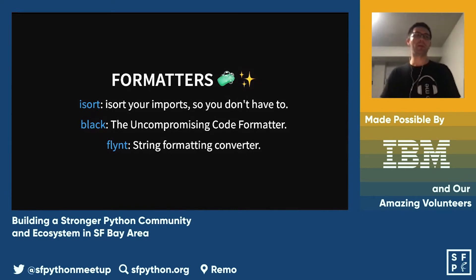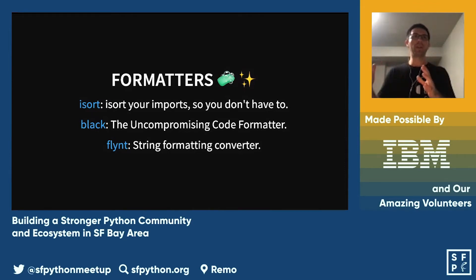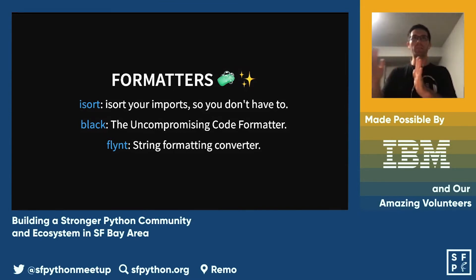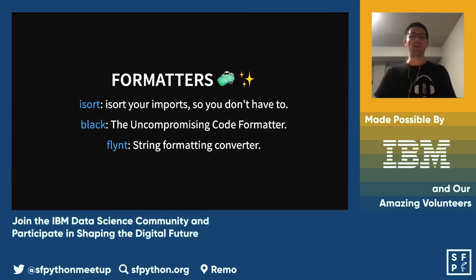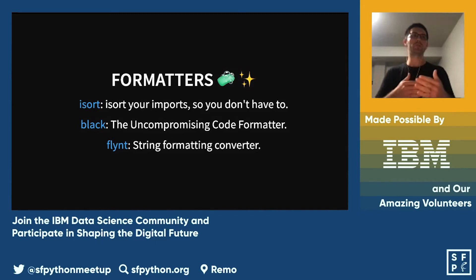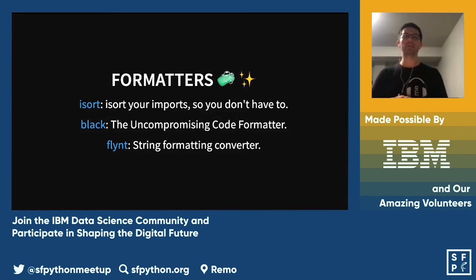Then you have Black, which has a maximum line length of 88 by default — you can change that as we'll see later. It keeps your code within that margin, formats everything consistently, keeps line breaks and quotes the same across your codebase, and helps with spacing between functions, class definitions, and trailing commas.